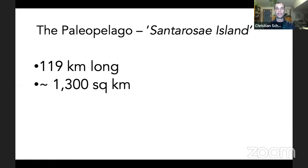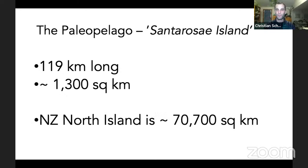I'm going to focus specifically on the northern group of four islands because they were at one point all connected to each other in an island known in paleoecology as Santarosae. It was about 119 kilometers long when sea levels were somewhat lower — approximately 1,300 square kilometers. For comparison, the North Island of New Zealand is about 70,000 square kilometers, so even in prehistory Santarosae was much smaller than New Zealand's North Island.